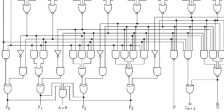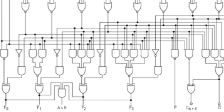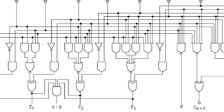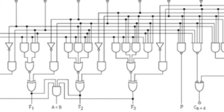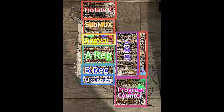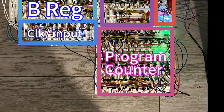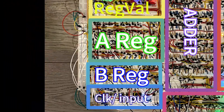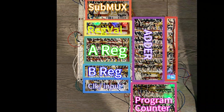It turns out that if you connect enough of these logic circuits, you can get some complex behaviour — like a circuit that can add two numbers together, a circuit that can subtract two numbers, a circuit that can count, and even a circuit that can remember information.